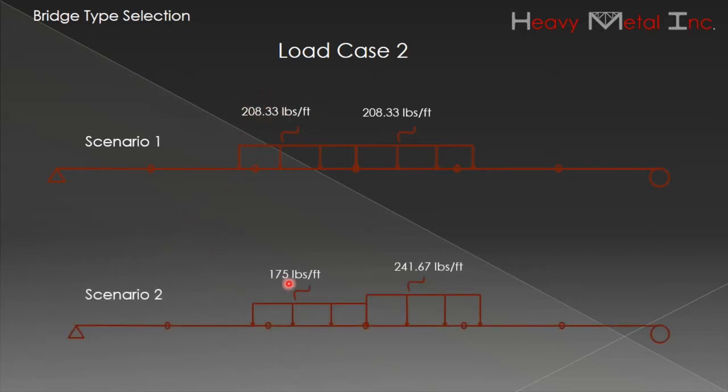Scenario 2 is based on S6 loading from the previous table, causing two distributed loads of 175 pounds per foot and 241.67 pounds per foot.